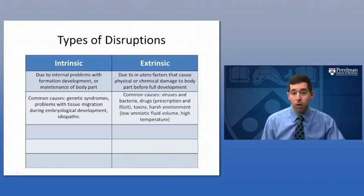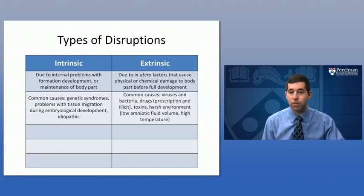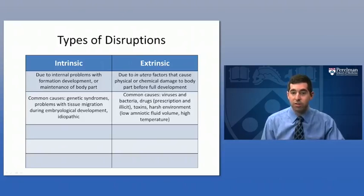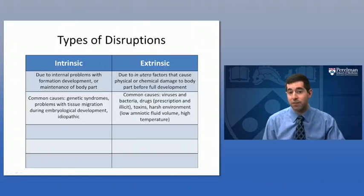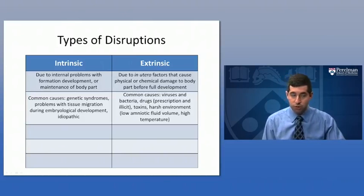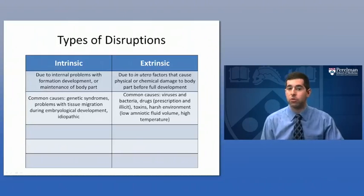Extrinsic disruptions may also be idiopathic, but we do know some common causes. Viruses or bacteria can cause a disruption, especially with exposure early in development. Drugs — thalidomide is an example that caused disruptions in limb development. Toxins, as well as a harsh uterine environment such as low amniotic fluid volume, which could result in high temperature or physical shock to the developing child, can also cause these disruptions.